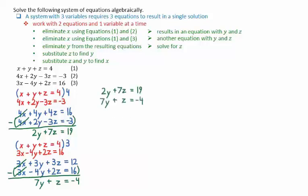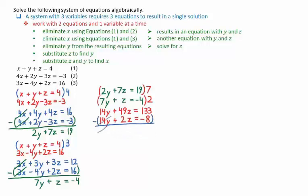We can then take these two equations involving y and z: 2y plus 7z equals 19, and 7y plus z equals negative 4. Multiplying the first equation by 7 gives 14y plus 49z equals 133, and the second equation by 2 gives 14y plus 2z equals negative 8. Subtracting these equations eliminates y: 47z equals 141, so dividing both sides by 47 gives z equals 3.